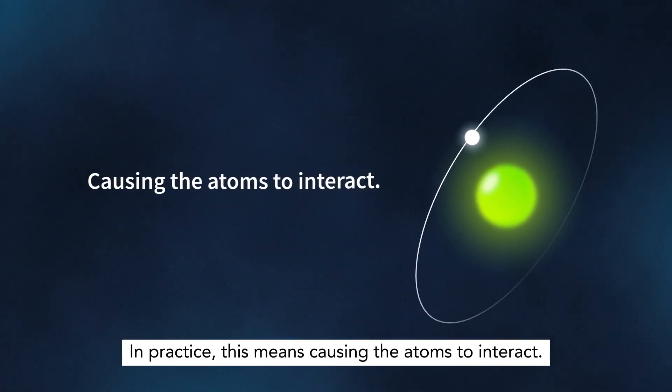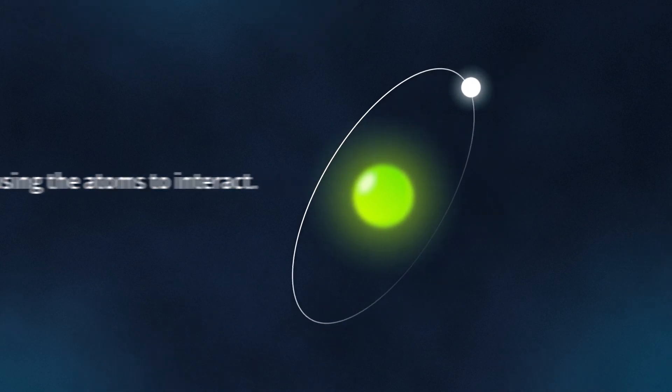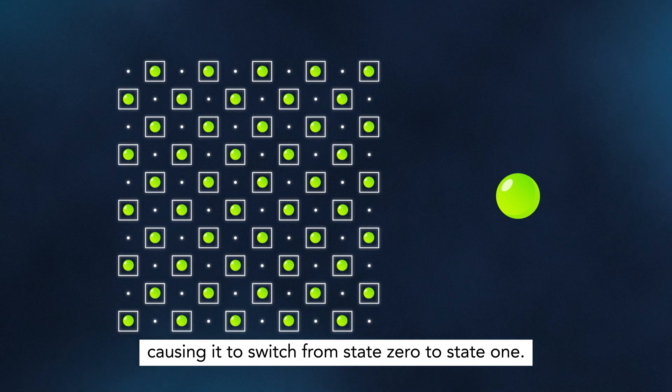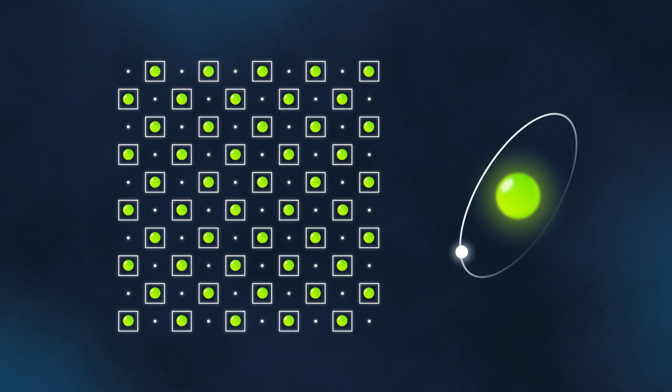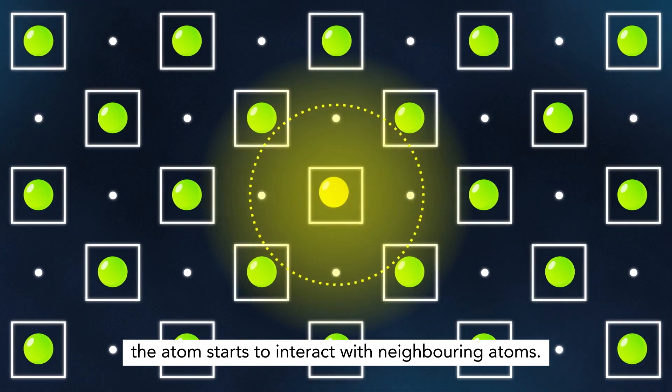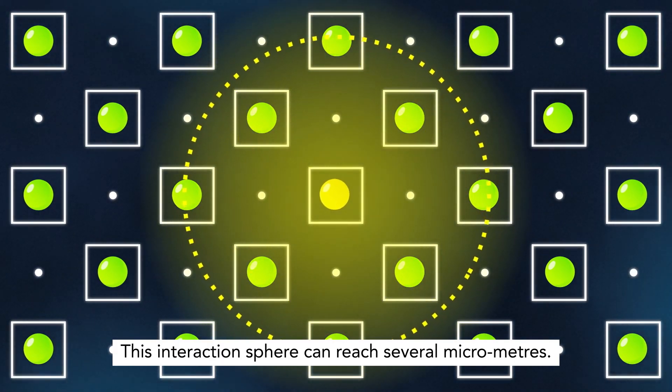In practice, this means causing the atoms to interact. We use lasers to raise an atom's energy level, causing it to switch from state 0 to state 1. When in an excited state, the atom starts to interact with neighboring atoms. This interaction sphere can reach several micrometers.